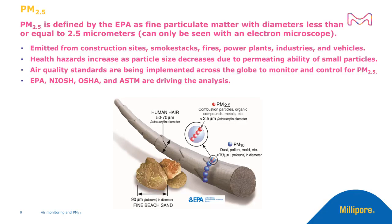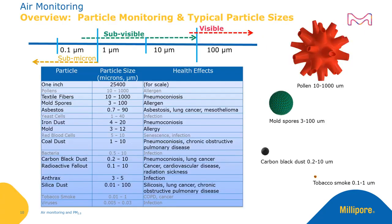By and large, the EPA, NIOSH, OSHA, and ASTM are driving this analysis. Here is an overview of a variety of particle sizes commonly monitored. Larger particles such as pollen and some textile fibers are visible to the naked eye, while PM2.5 particles are sub-visible.